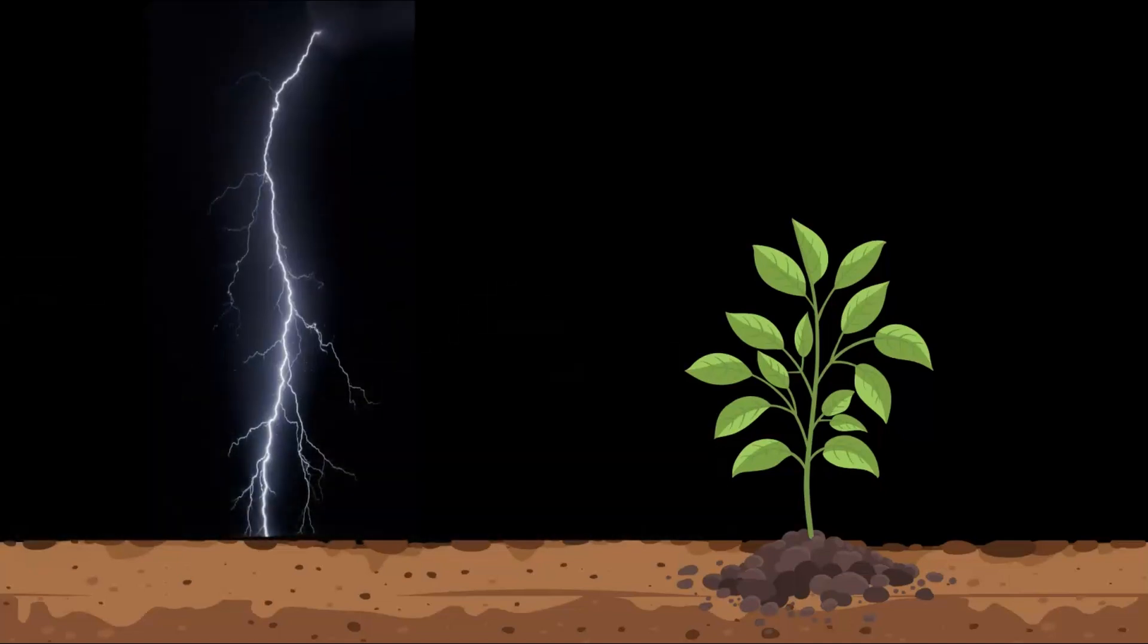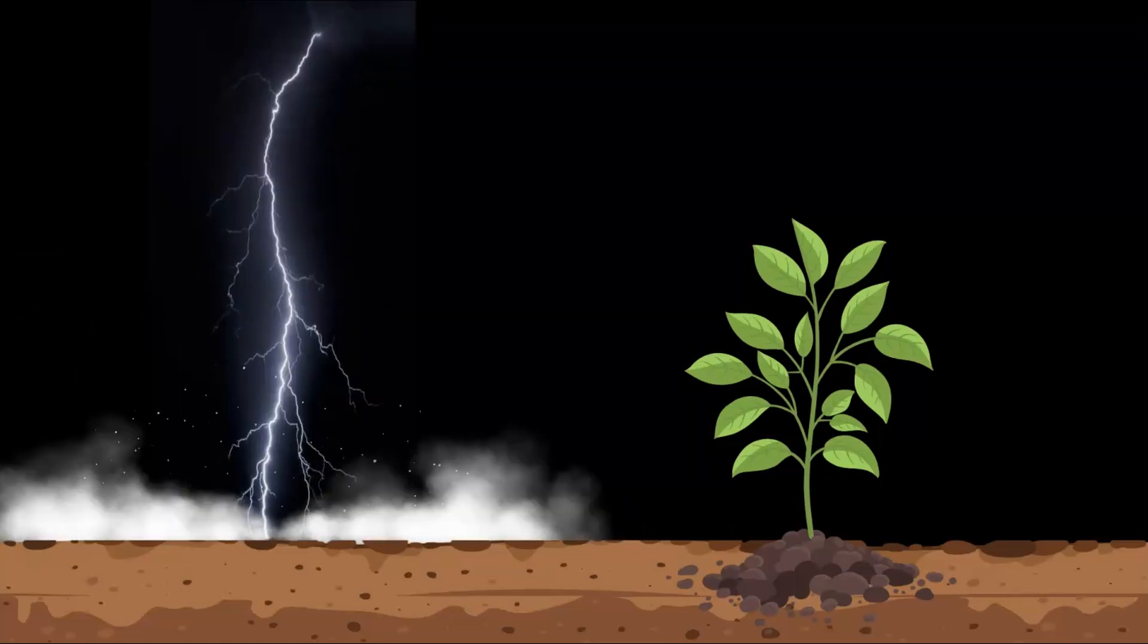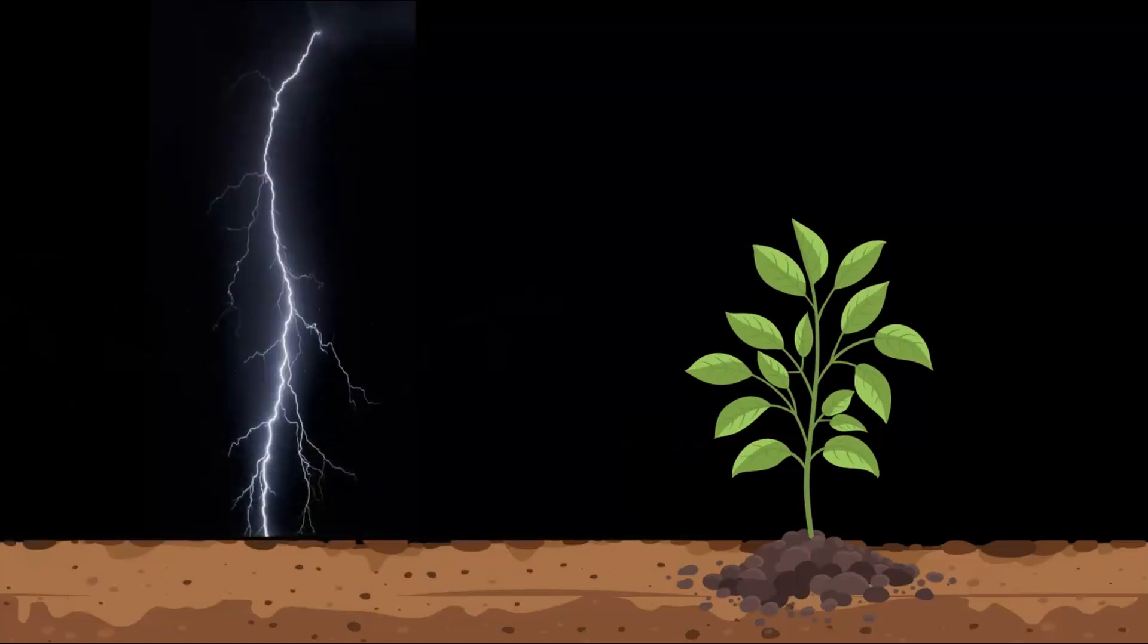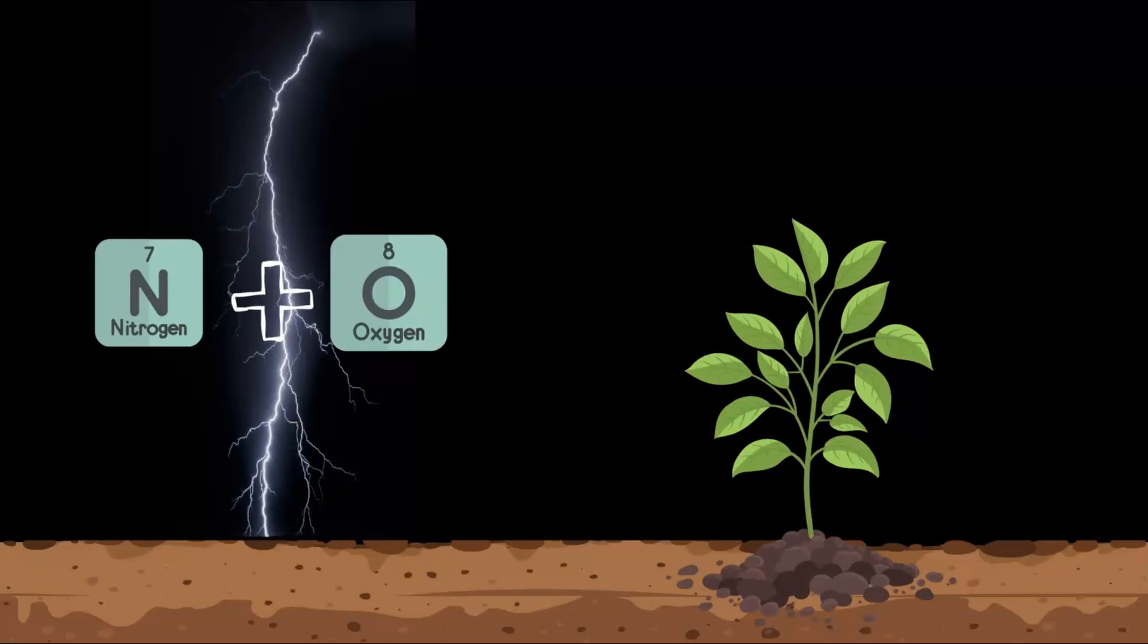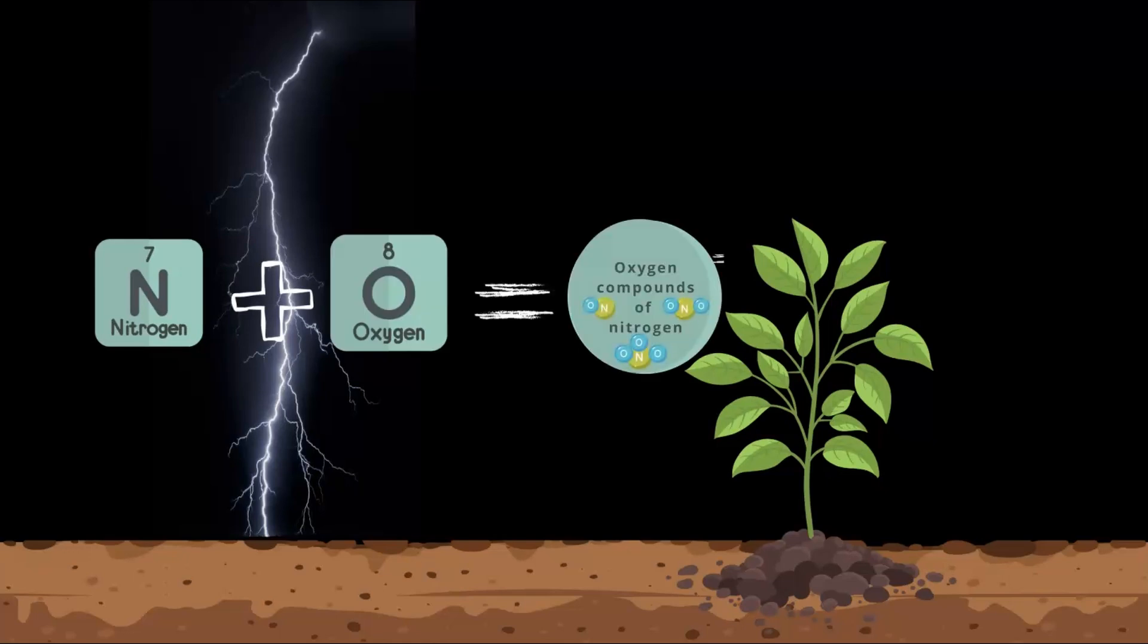And here is something really interesting. Lightning fixes nitrogen as well. Yes, you heard that right. Lightning fixes nitrogen. And here is how it works. The intense energy during lightning helps nitrogen combine with oxygen, and this creates oxygen compounds of nitrogen.